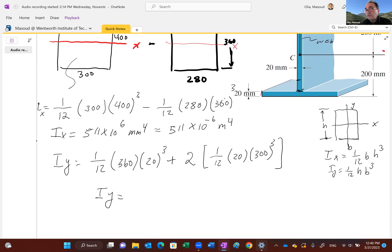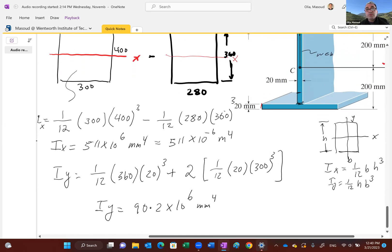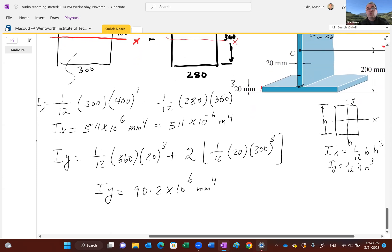For I sub y, you're going to get 90.2 times 10 to the 6 millimeters to the power 4. Of course, you can change it to meters to power 4. For a typical I-beam, I with respect to x-axis, which is usually the way these beams are being loaded and the bending is about that major axis, x-axis. I sub y is much smaller than I sub x. It's about five, more than five times smaller or I sub x is five times larger.